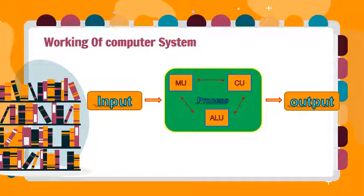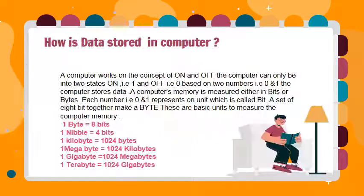When you give an instruction to the computer, these instructions get converted into a new language. This is how the computer system works. The next question is how data is stored on a computer. The computer only understands machine language — it is in the form of zeros and ones. It means a computer works on the concept of on and off. The computer can only be in two states: on, that is one, and off, that is zero. These two numbers are known as binary digits.